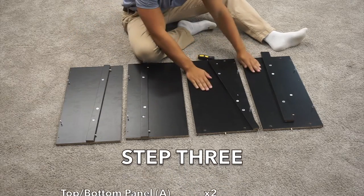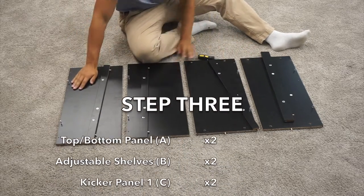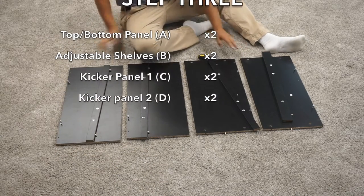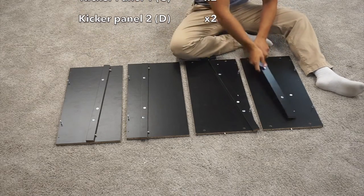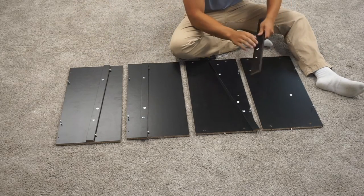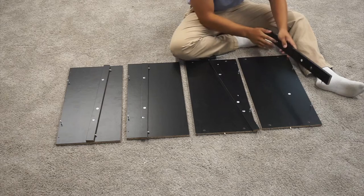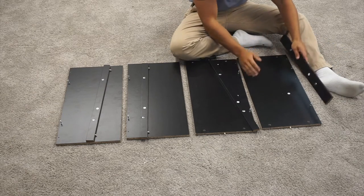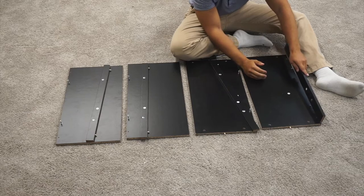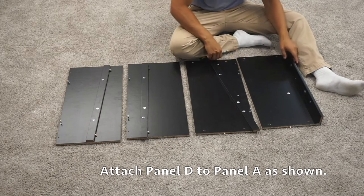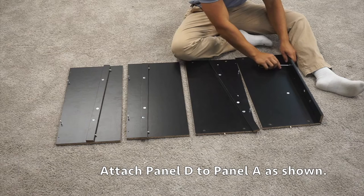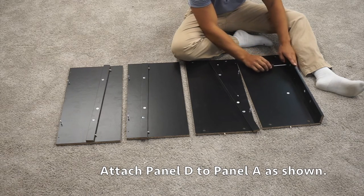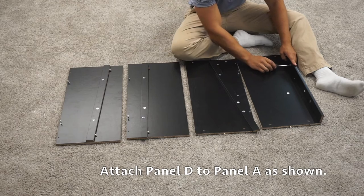For step three, you'll need your two A panels, your two B panels, and your C and D panel. You can start with one of the A panels. You will want to slide the D panel onto it so that the cam locks are facing this way. If it doesn't slide in, that probably means that you don't have the cam locks pointed in the right direction. Once you have it on there, you can turn clockwise to tighten it down.